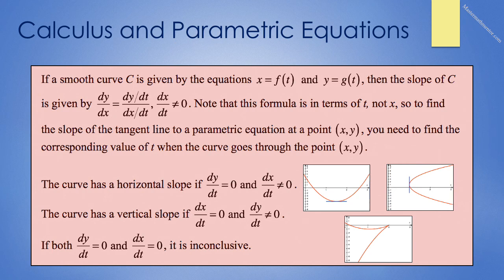To find the slope of the tangent line to a parametric equation at some point (x, y), we need to find the corresponding value of t when the curve goes through that point. The curve will have a horizontal slope if dy/dt equals zero but dx/dt does not equal zero. The curve will have a vertical slope if dx/dt equals zero and dy/dt is not equal to zero. If both equal zero simultaneously, results are inconclusive.